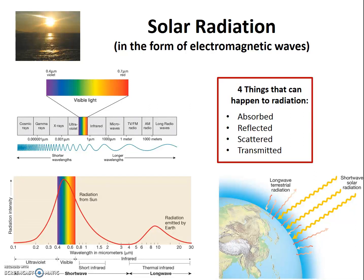Thus far, we have concerned ourselves with one form of heat transfer: radiation. We have learned that solar energy is in the form of electromagnetic waves, and that these waves are classified by wavelength. The wavelengths that reach the top of the Earth's atmosphere are primarily ultraviolet, visible light, and infrared — and collectively, we call this shortwave radiation.